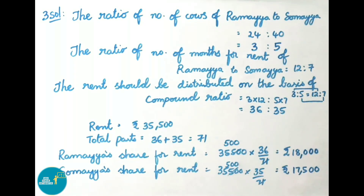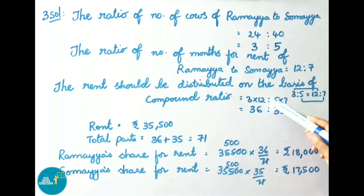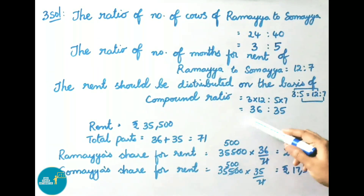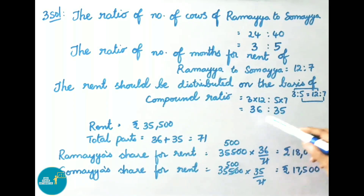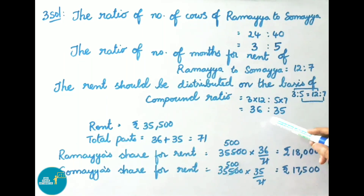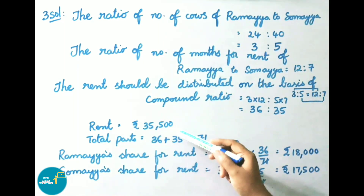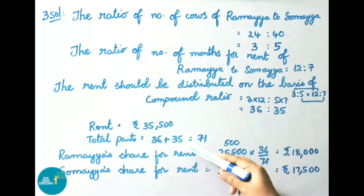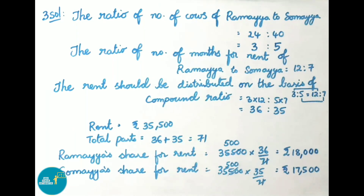The rent should be distributed on the basis of compound ratio. The previous ratio is 3 is to 5 and this ratio is 12 is to 7. Using compound ratio formula A into C to B into D, that is 3 into 12 is to 5 into 7, giving 36 is to 35. Adding 36 plus 35, total parts equals 71.